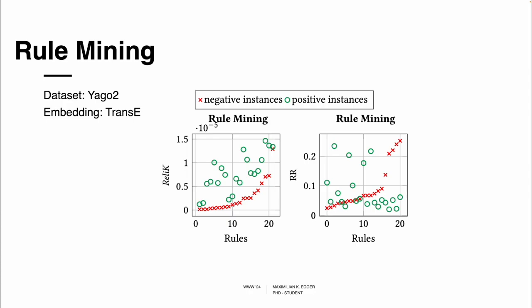As one example from our results, I will showcase the complex task of rule mining in a knowledge graph. Given a TransE embedding of Yago2, we can observe that the Relic scores between positive and negative instances are clearly separated, and that the positives also get higher scores. Whereas, if we use reciprocal rank instead of those same instances, we do not get a similar outcome.